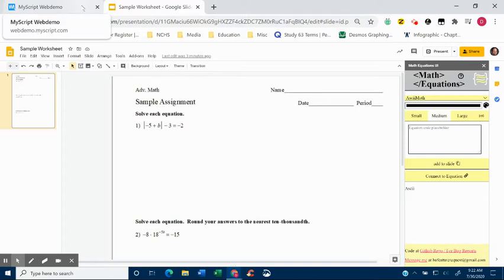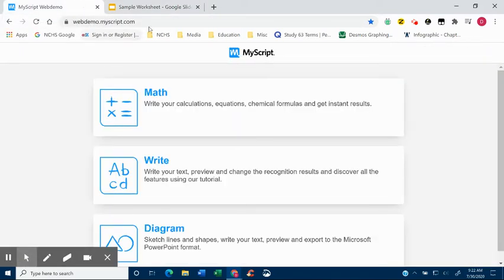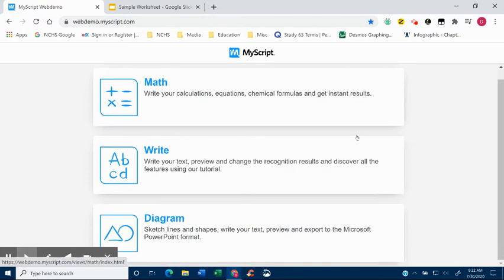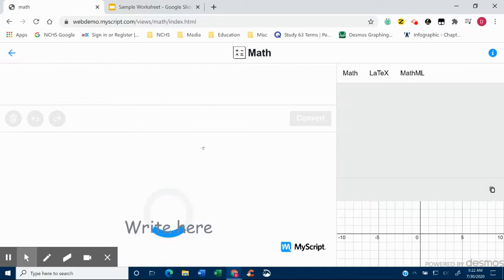So it's getting the code right for the more complicated things. Well, we're going to look at a different tab here, and you'll see a website at the top, webdemo.myscript.com. You'll find it in the Canvas under the Technology module. You'll see the web address for it. It's more than just math. It's got ways to write, but it allows you to actually write things. So I'm going to go to the Math tab.